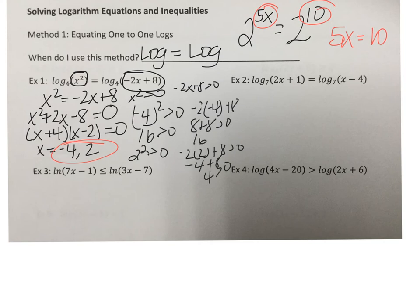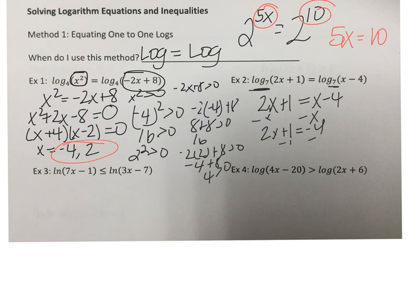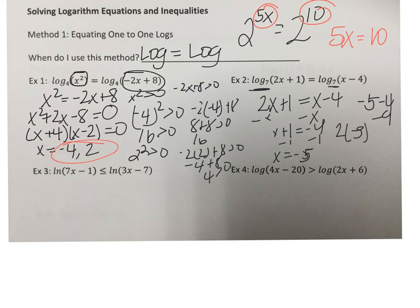Let's look at the next problem — I suggest you pause, solve it, then unpause. We have log base 7 and log base 7, so I can say 2x + 1 equals x − 4. Subtracting x, x + 1 equals −4, then minus 1 gives x equals −5. Checking: negative 5 minus 4 is −9, and 2 times −5 plus 1 is −9. Although what's inside the log is equal, the log is undefined at −9. So negative 5 is not a solution.